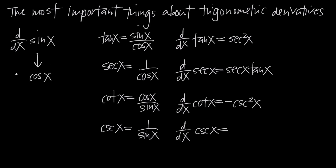Now if we take the derivative of cosine — we want to find the derivative with respect to x of cosine of x — what we get is negative sine of x. So if you can't memorize anything else, memorize this sequence: the derivative of sine of x is cosine of x, and the derivative of cosine of x is negative sine of x.